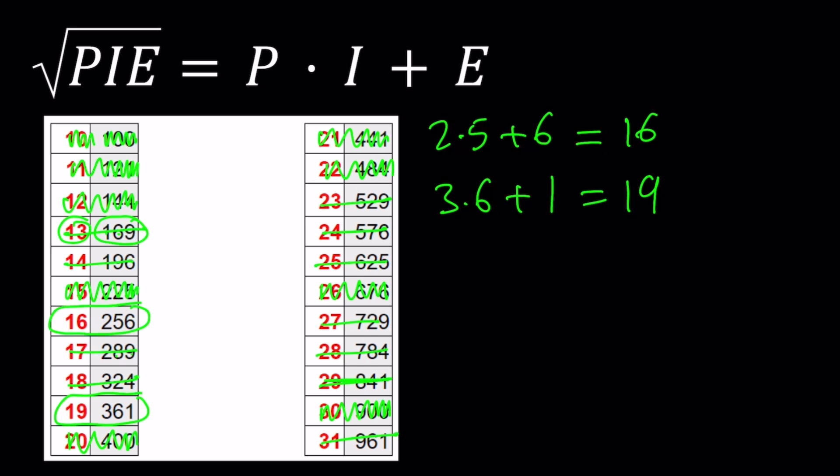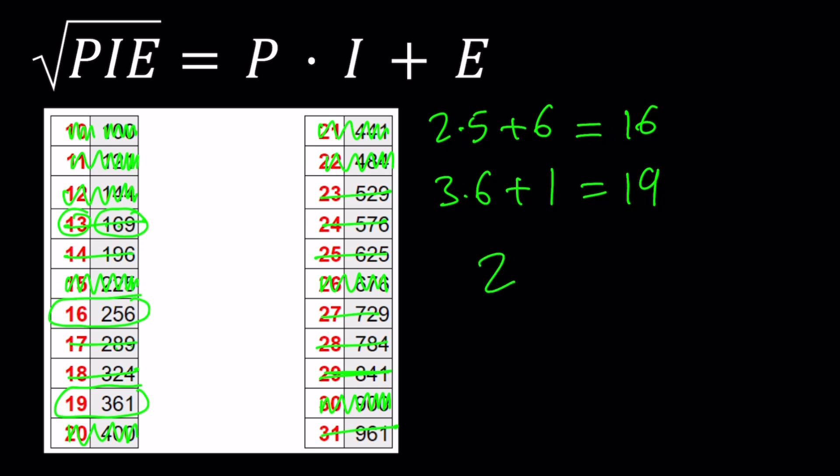So we end up with two solutions for this puzzle. And those numbers are 256 and 361. Which means P could be 2, I could be 5, and E could be 6. Or P could be 3, I could be 6, and E could be 1.